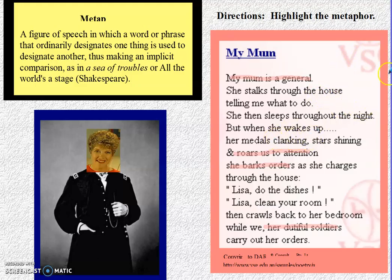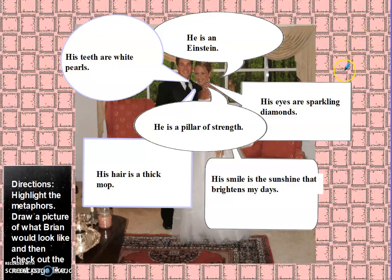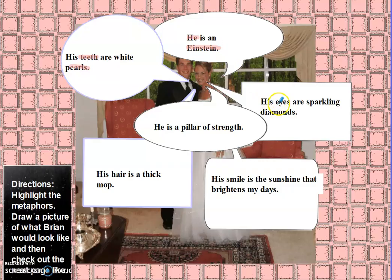There are some other things you might have noticed — some other figurative language, like 'clanking,' which is onomatopoeia. Now let's see metaphors used to describe a husband: 'His teeth are white pearls' — comparing his teeth to pearls. 'He is an Einstein' — comparing him to Einstein. 'His eyes are sparkling diamonds' — comparing his eyes to diamonds.